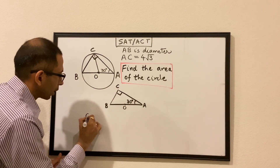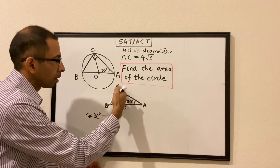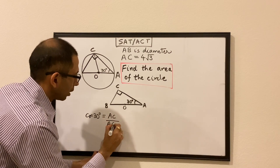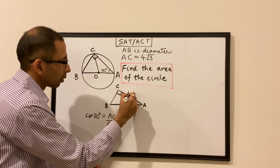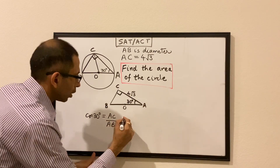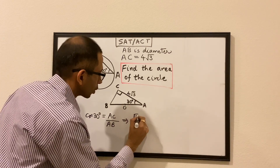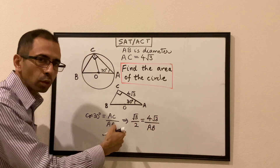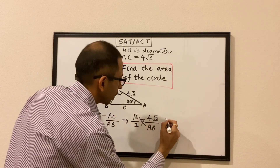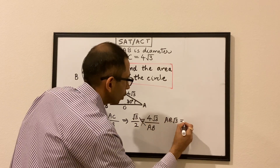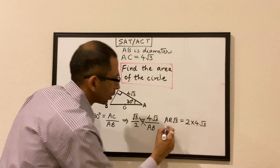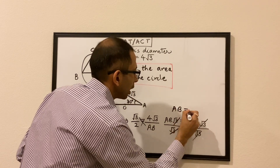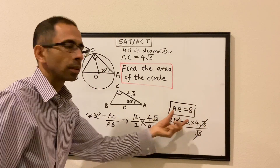Looking at this triangle, we use cosine of 30 degrees. The cosine of an angle is the base over the hypotenuse, so here it's AC over AB. We know AC is 4 root 3, and cos 30° is root 3 over 2. So root 3 over 2 equals 4 root 3 divided by AB. Cross multiplying: AB times root 3 equals 2 times 4 root 3. Dividing both sides by root 3 gives AB equals 8.